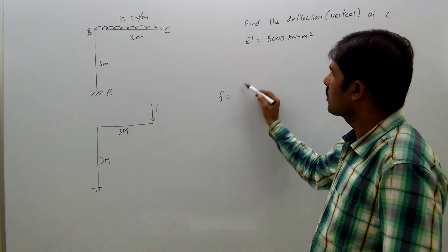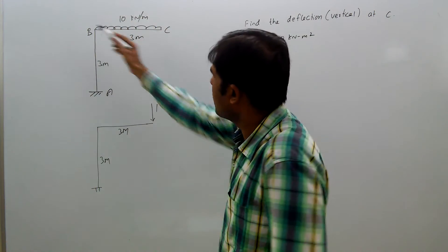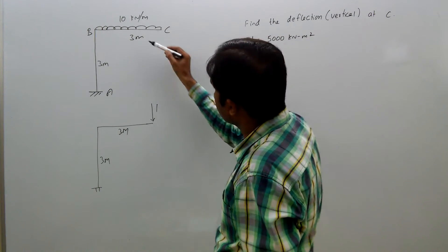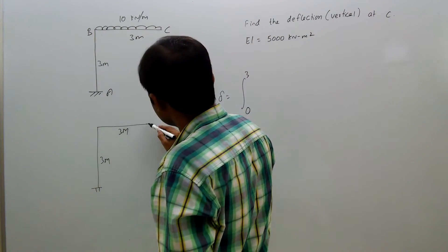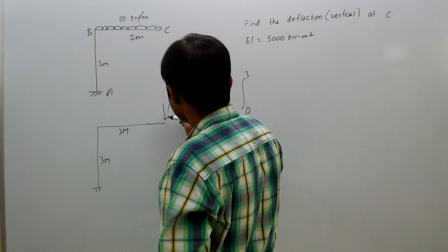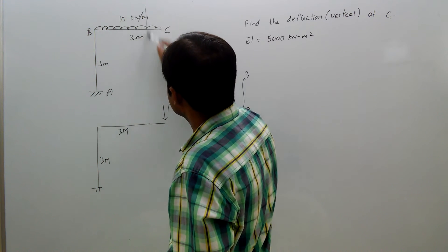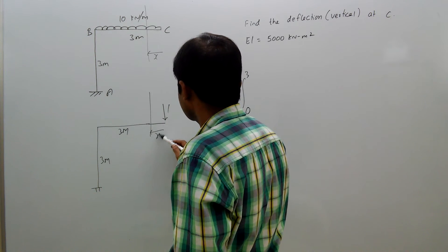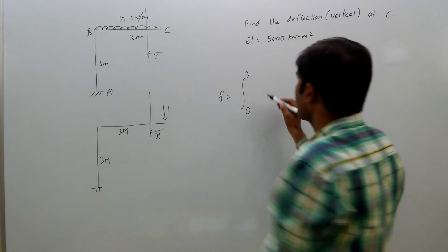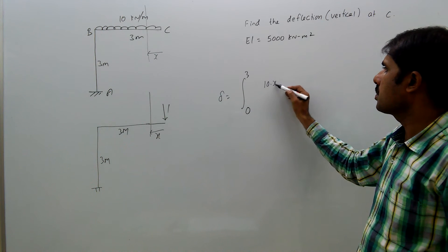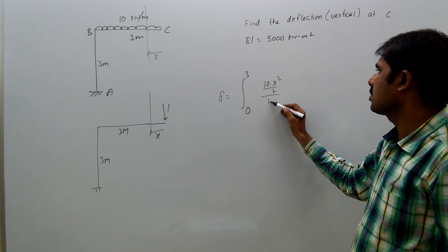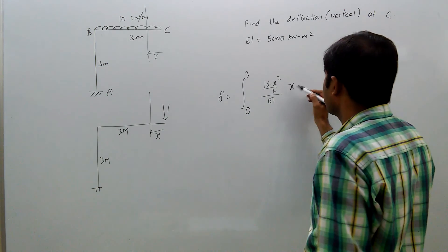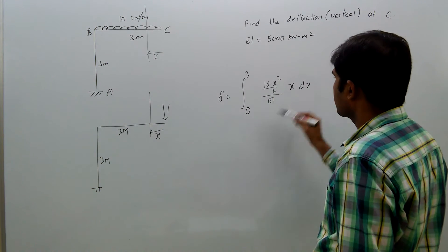Delta equal to integral 0 to 3 for the beam, at distance x here. We have, taking x in sections, M is 10 into x square by 2, by EI into 1 into x, that means x dx, plus